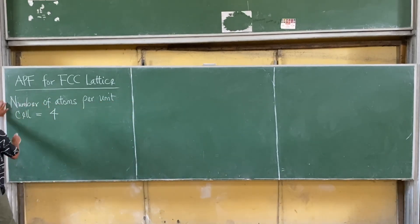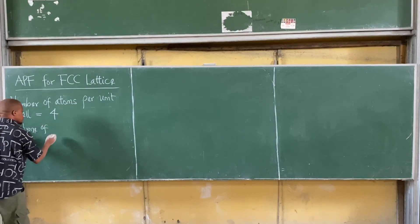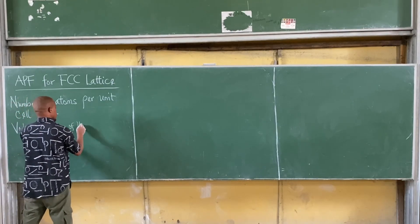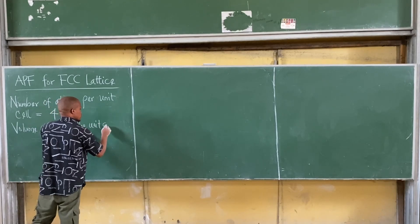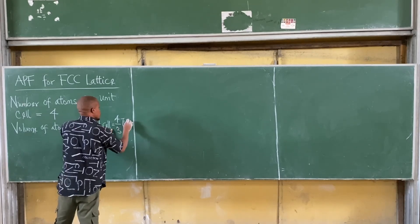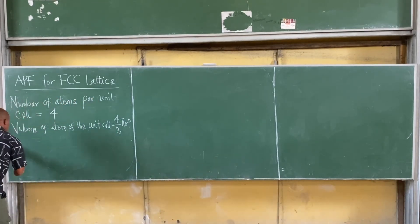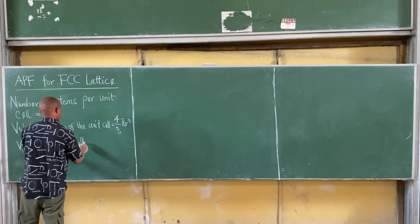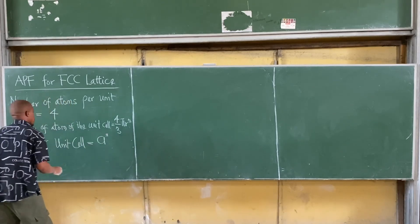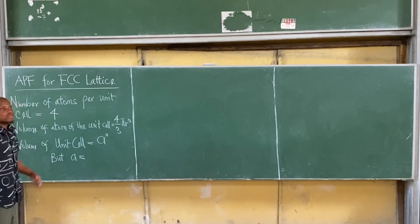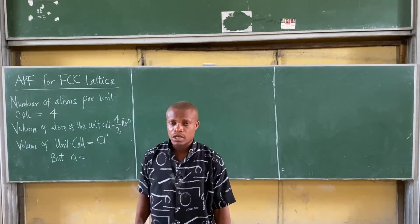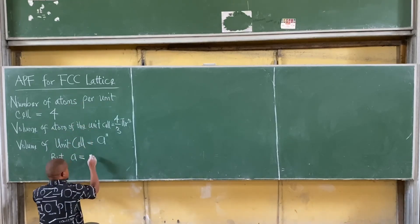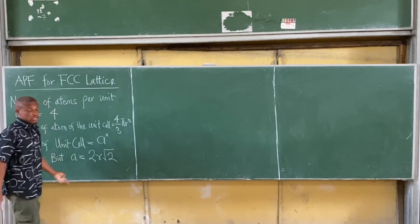Next up, volume of atoms is always 4/3πr³. Volume of unit cell equal to a³. But the lattice constant a in terms of the radius for FCC lattice was gotten to be 2R√2. We proved this.